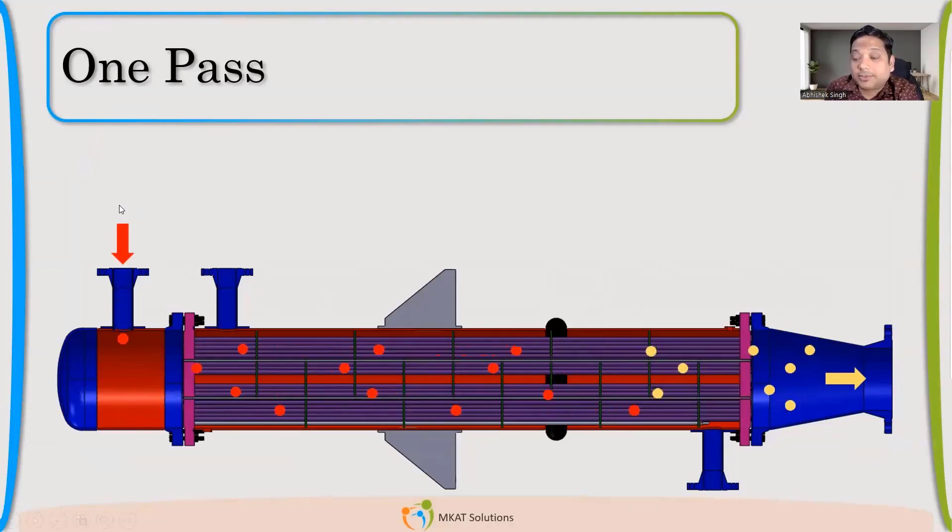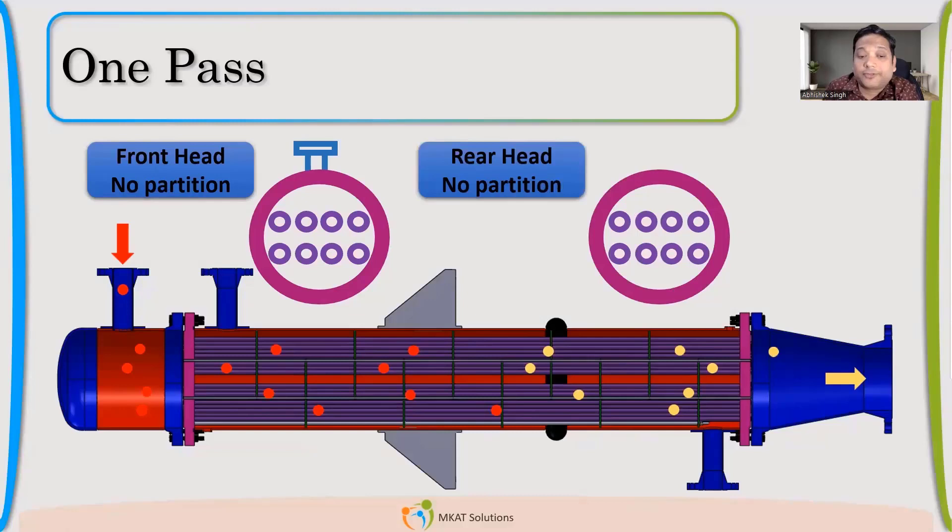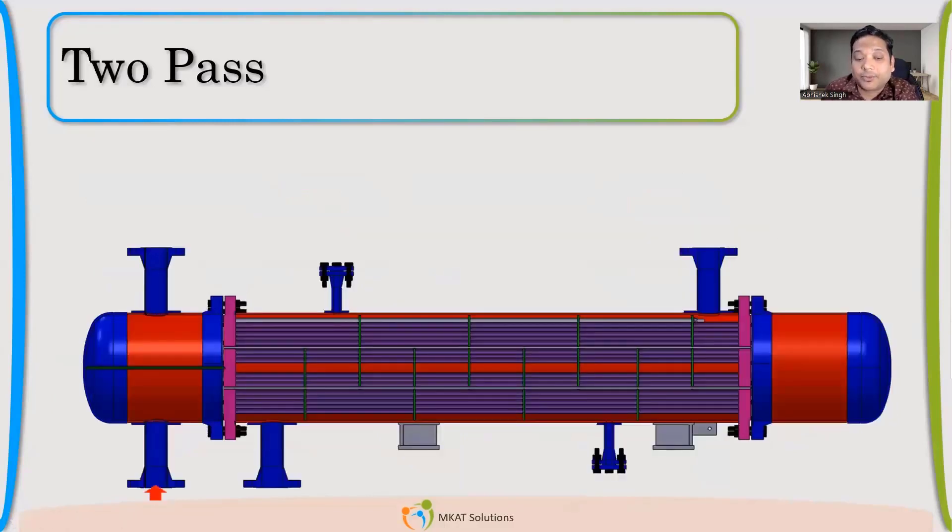So tube side fluid is coming like this, going in and going out. If we see the front head, the tube sheet, and the rear end tube sheets, there will be direct inlet in the tubes and from right hand side, it will be exit.